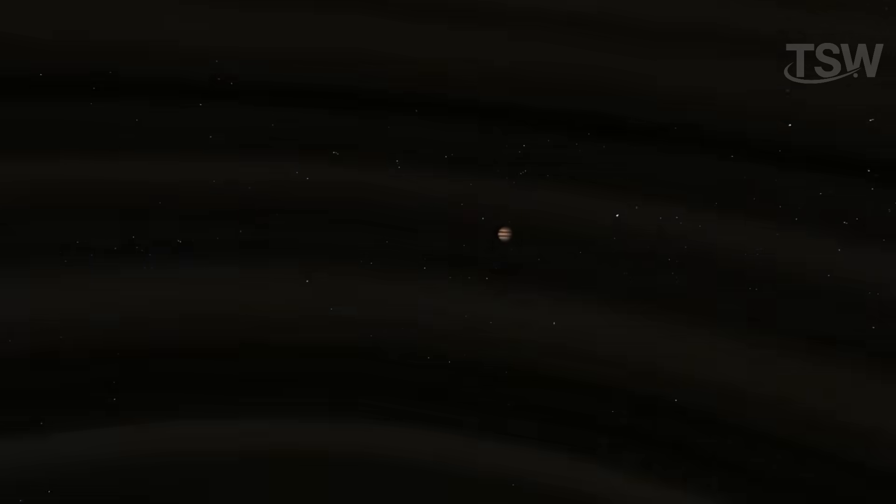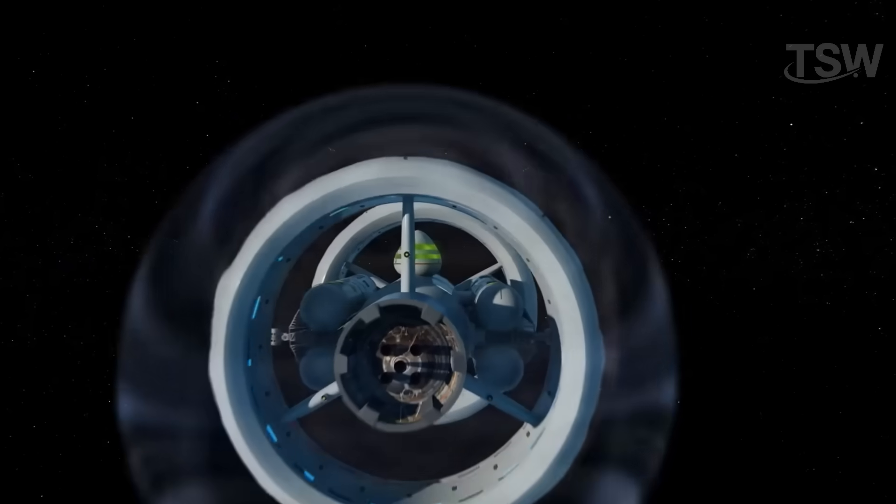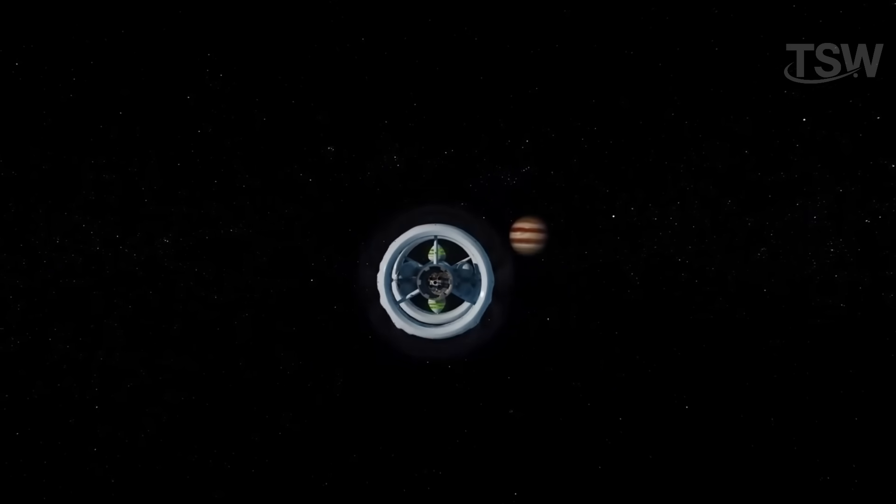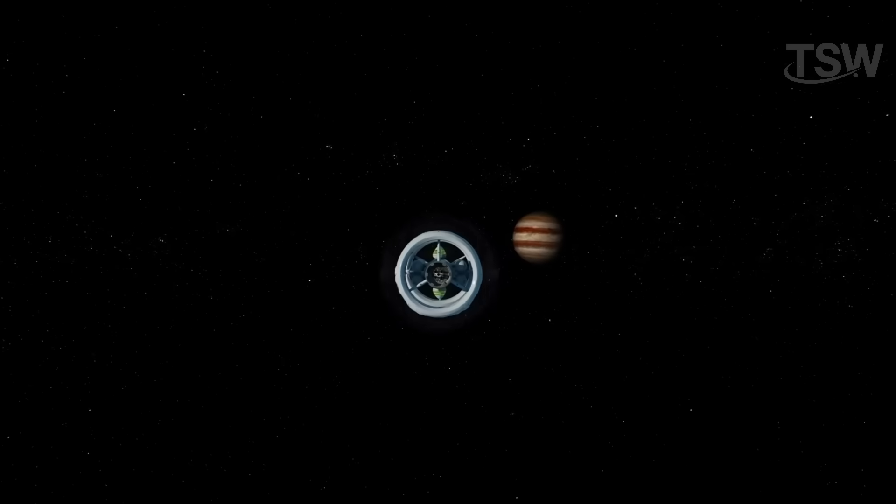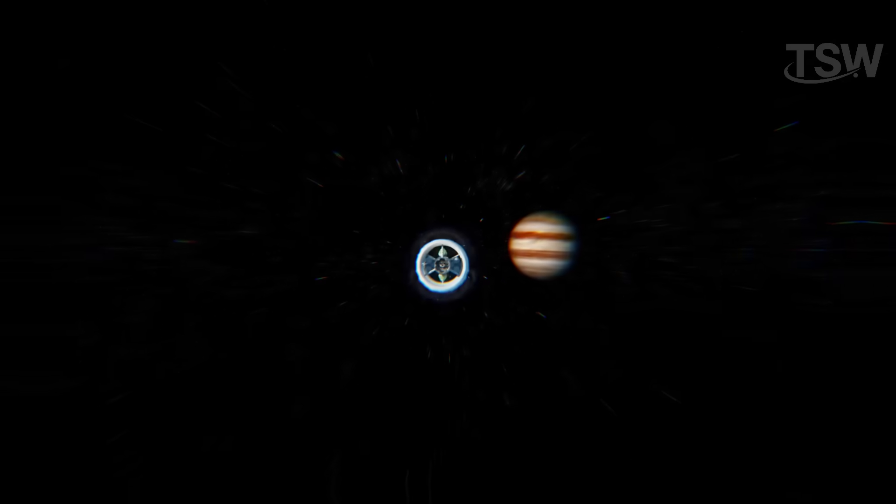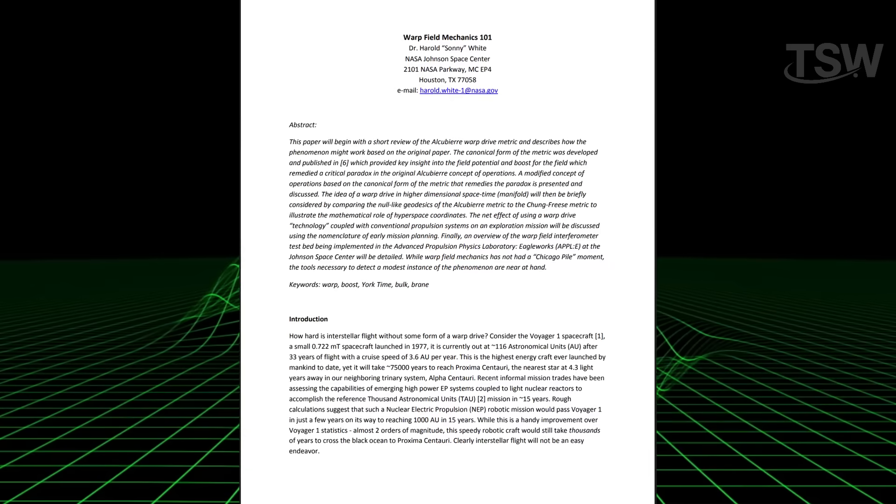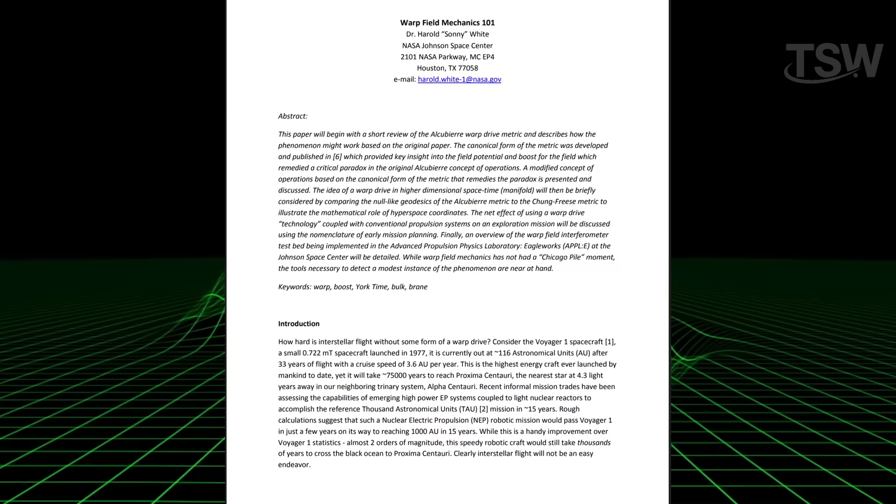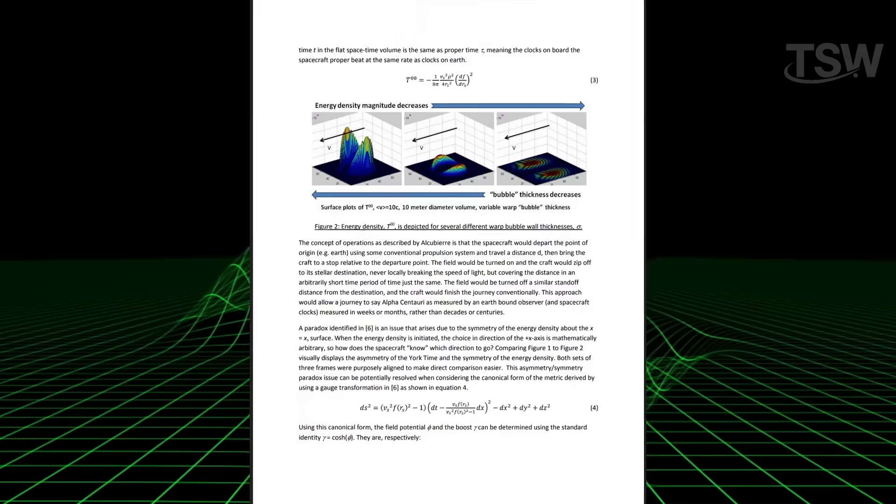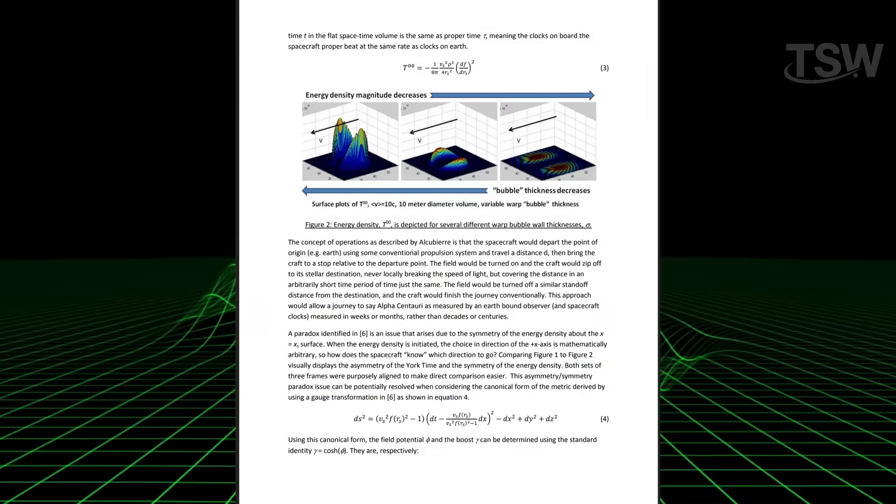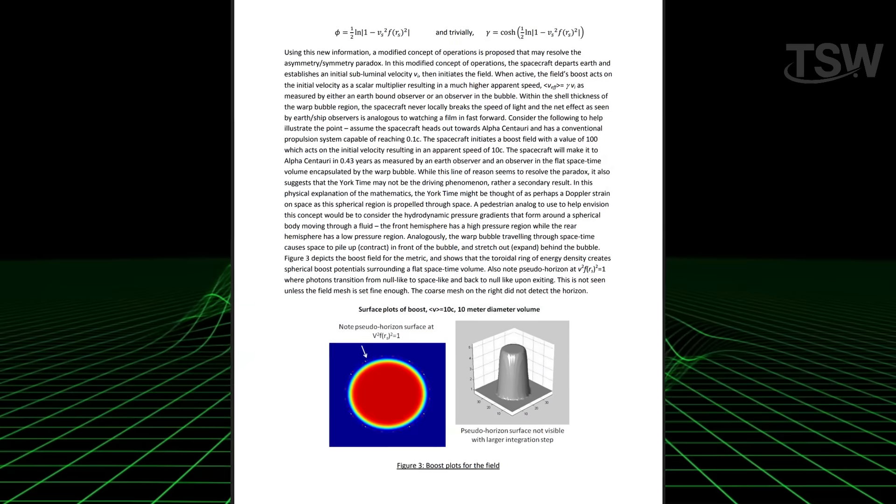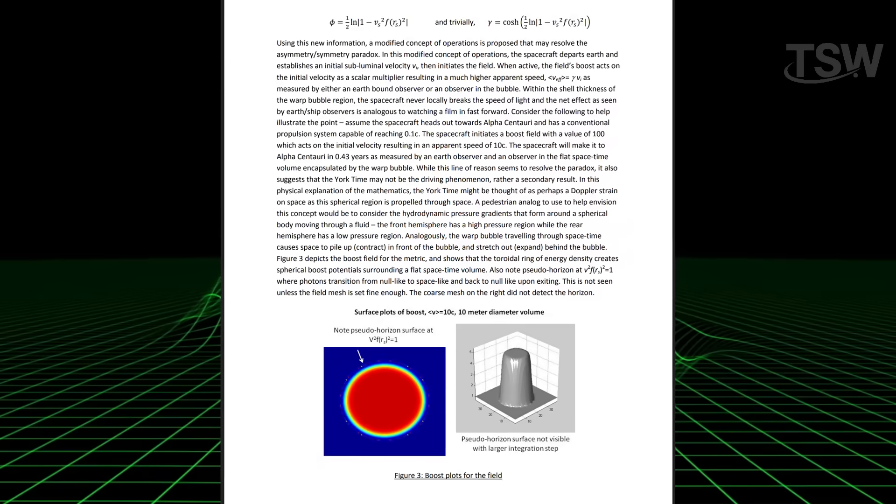Another critical issue is the tremendous energy requirement. Early calculations suggested that to move a spacecraft with warp drive, you'd need more energy than the total mass of the planet Jupiter, converted into negative matter. But later revisions, like those by physicist Harold White at NASA's Eagleworks Laboratory, drastically reduced that number. By modifying the shape of the space bubble, making it more donut-shaped rather than spherical, he estimated that the energy requirement could drop by several orders of magnitude, possibly to the mass equivalent of a small spacecraft.